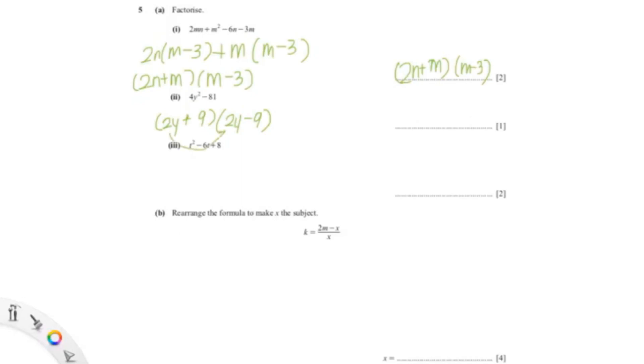It can't be plus because if you expand it you won't get the same answer above. It's minus, and you can check this because when you multiply it out you get 4y²-18y+18y-81. So the -18y+18y equals 0, so it's only 4y²-81.